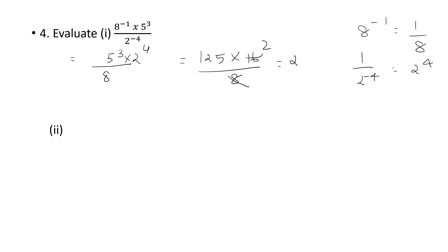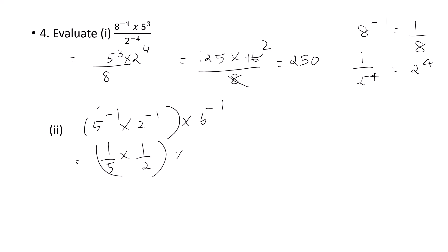The answer is 125 into 2 raised to 4 (which is 16) divided by 8. Since 8 and 16 cancel, the value is 250. For the second question: 5 raised to minus 1 into 2 raised to minus 1 into 6 raised to minus 1 — these become 1 by 5, 1 by 2, and 1 by 6 respectively. So 1 by 5 into 1 by 2 is 1 by 10, and into 1 by 6 gives 1 by 60.